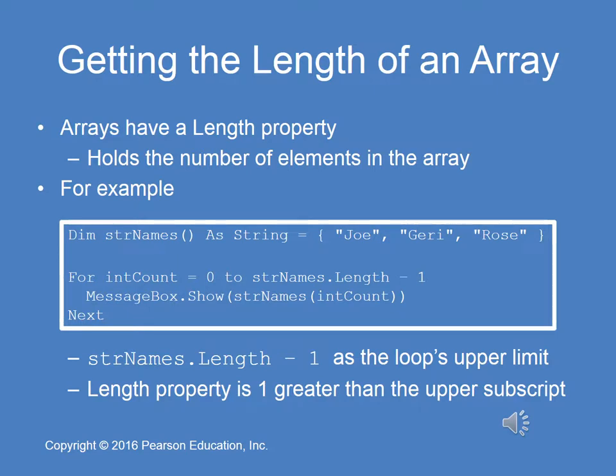Do you see the problem? If you were to step through int count equals zero to string names dot length, you would get an invalid index value. The correct approach is to use string names dot length minus one. So message box dot show, string names, int count — this will display in a message box each of the values stored in index locations zero, one, and two.